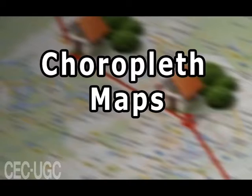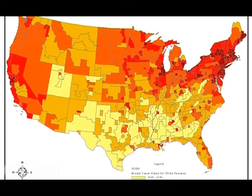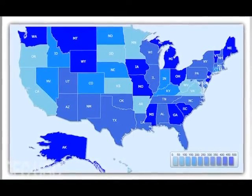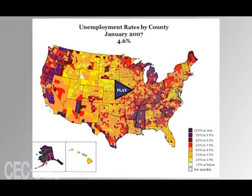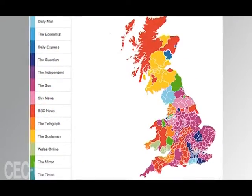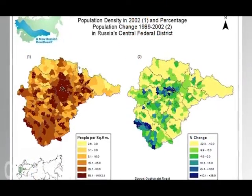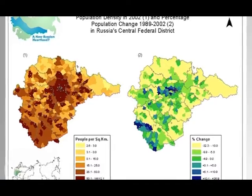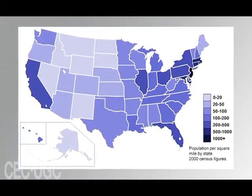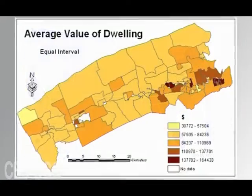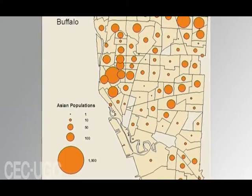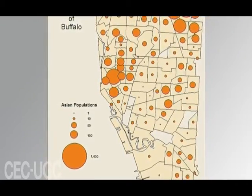Now let us discuss choropleth maps. Choropleth mapping is commonly used to show data for counties, states, or other enumeration units. Data collected for choropleth maps is usually grouped into separate classes based on attributes or other forms of classification. The classes are given a specific color or shading based on their values and what they are trying to portray. Choropleth maps are most effective when the data or classes change abruptly at each enumerated boundary.